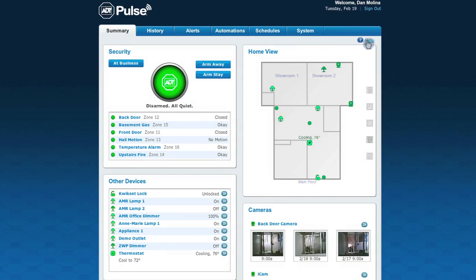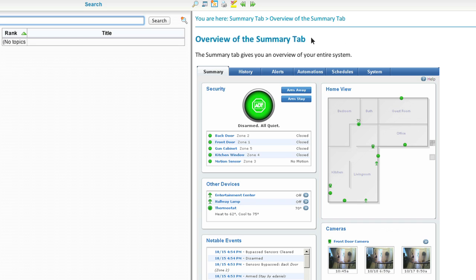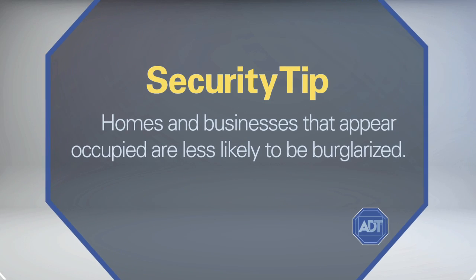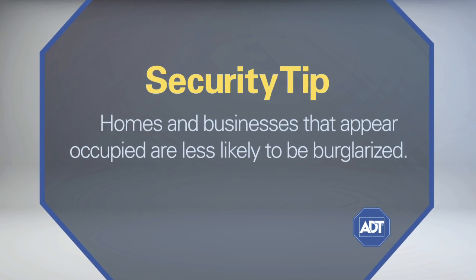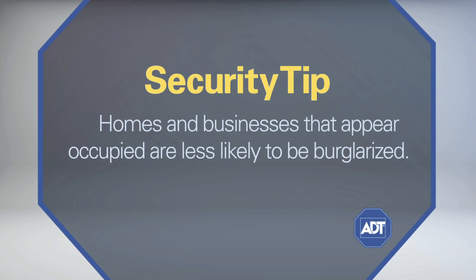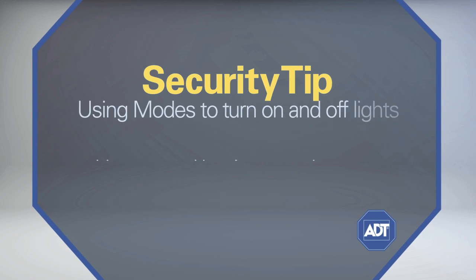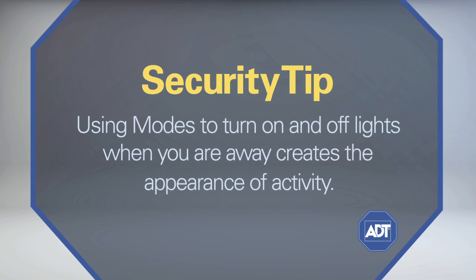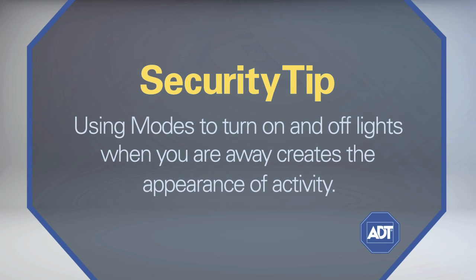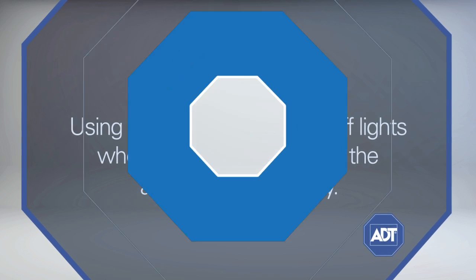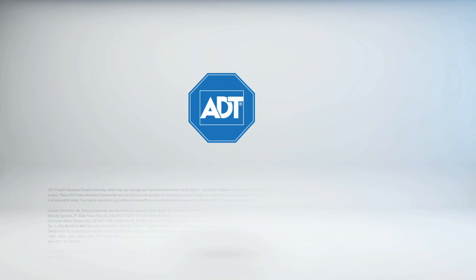For more information about modes, please visit the Help tab on your ADT Pulse webpage. Security Tip: Homes and businesses that appear occupied are less likely to be burglarized. Using modes to turn on and off lights when you are away creates the appearance of activity.